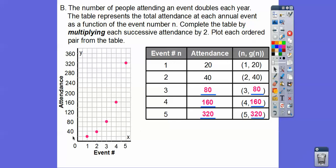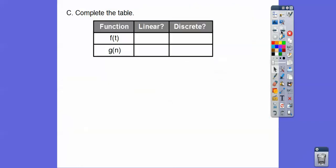Sometimes the exponential curve goes up much steeper, sometimes more gradual. Exponentials always make these J-kind-of-curve shapes. And we can't have an event and a half, so this one is also discrete.